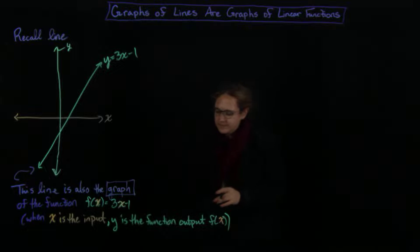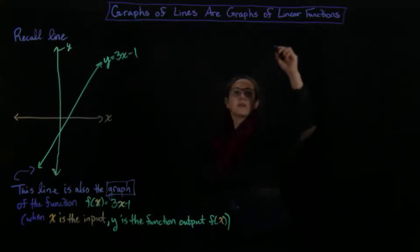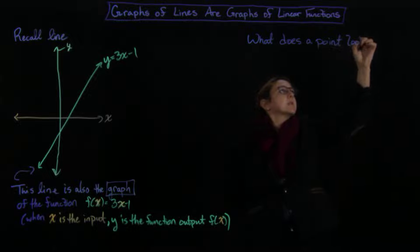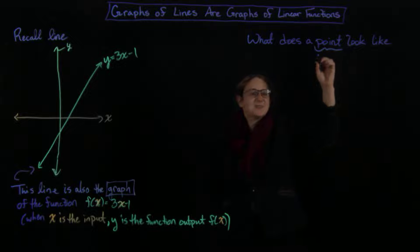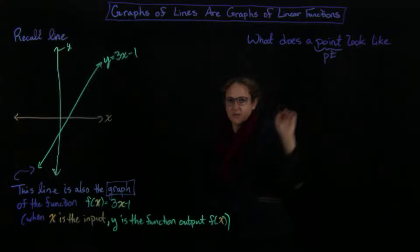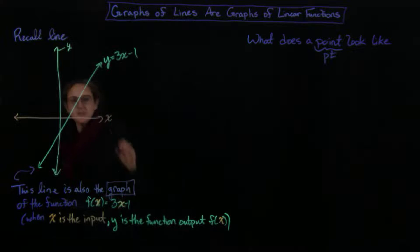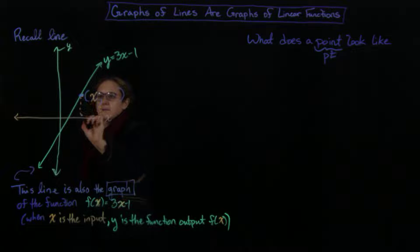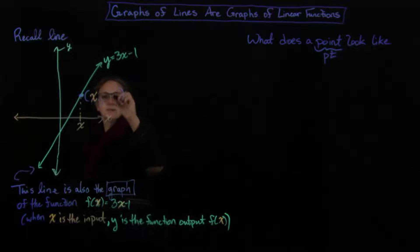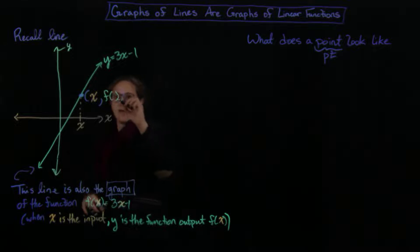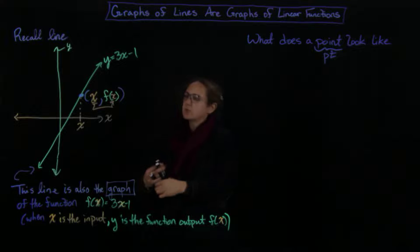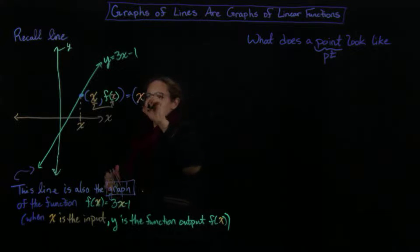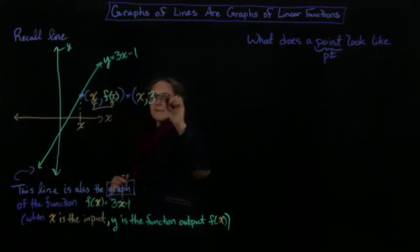So then we could ask ourselves, what does a point look like? We often like to abbreviate point as 'pt', so it's good to know that abbreviation. If I take a point on this graph, and I know the first coordinate is x, then the second coordinate is actually f of x. I plug x into f, and since f of x equals 3x minus 1, I get the point (x, 3x minus 1).